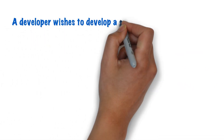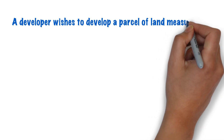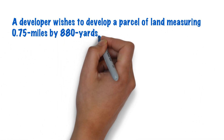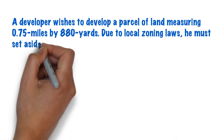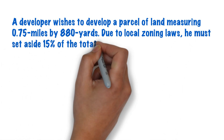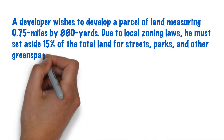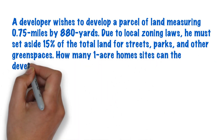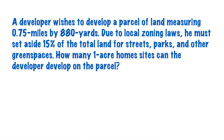Now that we've refreshed your memory, let's take a look at a sample exam question. A developer wishes to develop a parcel of land measuring 0.75 miles by 880 yards. Due to local zoning laws, you must set aside 15 percent of the total land for streets, parks, and other green spaces. How many one-acre home sites can the developer develop on the parcel?